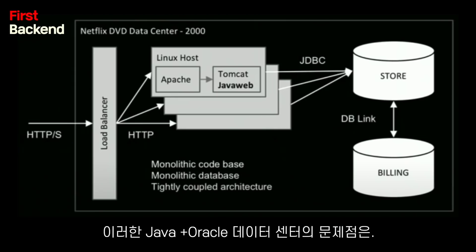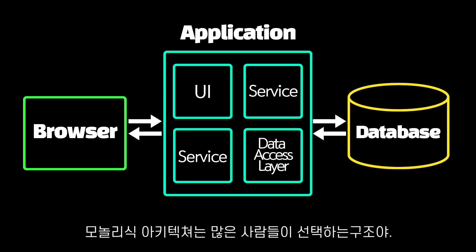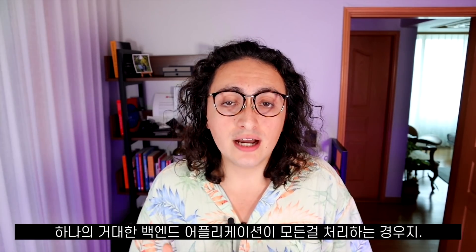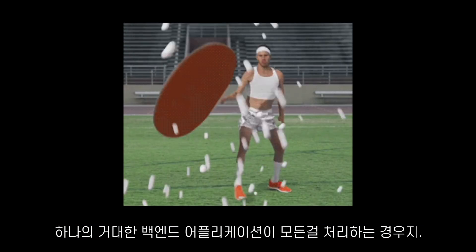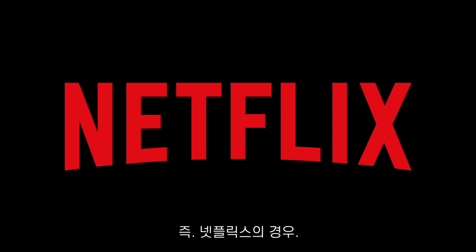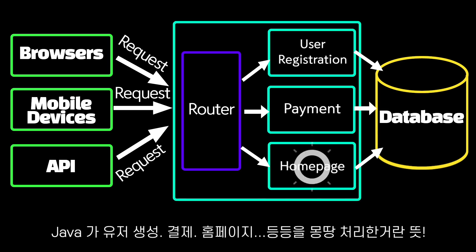The problem with this Java plus Oracle own data center architecture is that it was very monolithic. Monolithic architecture is almost the default architecture that everybody follows, where you have a single backend application doing everything. In the case of Netflix, they had a Java application that was in charge of the user registration, the payments, the homepage, the search bar — everything.